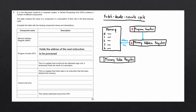Once memory has read the instruction, it passes it to the memory data register, which is the next special register within the CPU. This connection is known as the data bus. The memory data register then passes the instruction to the current instruction register, which holds the current instruction to be decoded and executed. Finally, the program counter is incremented by one so it can load the next address on the next Fetch Decode Execute cycle.